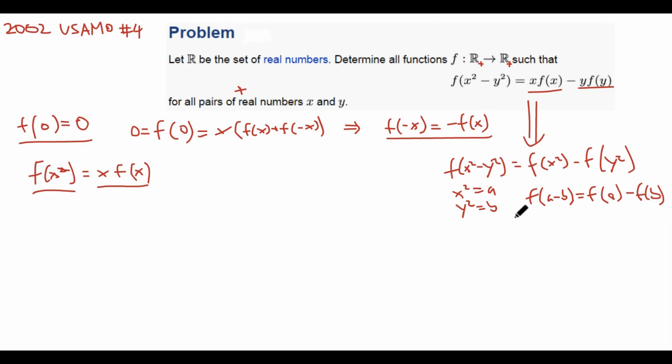Then we get that f(a - b) equals f(a) - f(b). And if we substitute, let's say, a - b equals a and rearrange a little bit, we get that this entire expression turns into f(a) + f(b) equals f(a + b). Now,